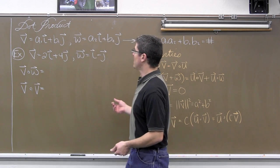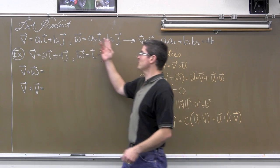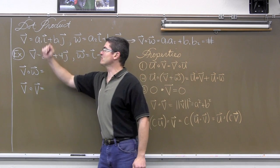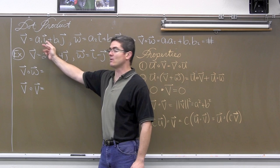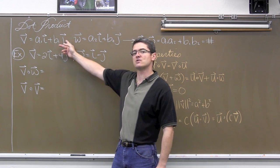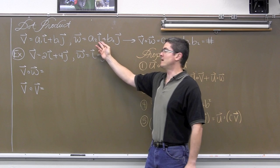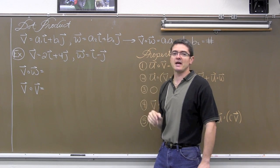Now the dot product is the process of... well, first you have to have two vectors in their horizontal and vertical components. So here I have vector v which is a₁ times vector i plus b₁ times vector j, and vector w which is a₂ times vector i plus b₂ times vector j.